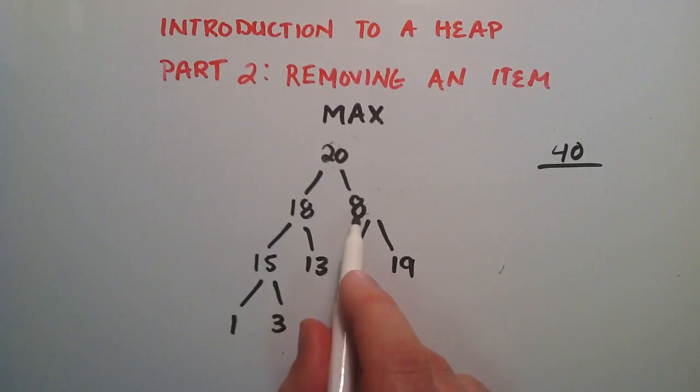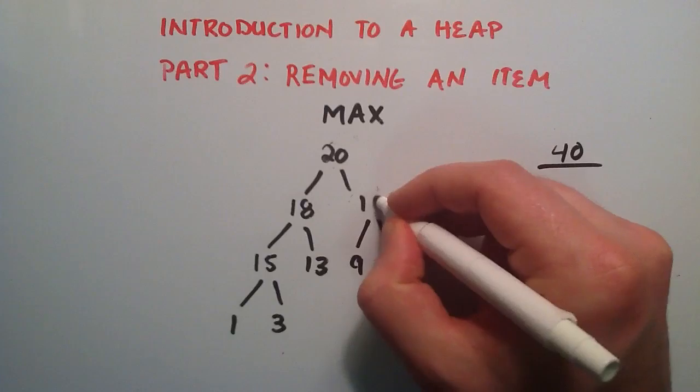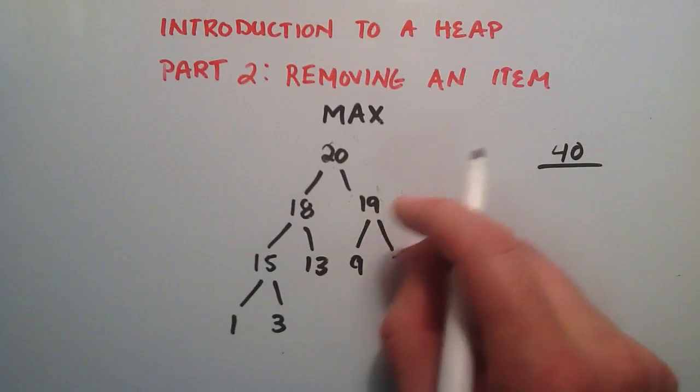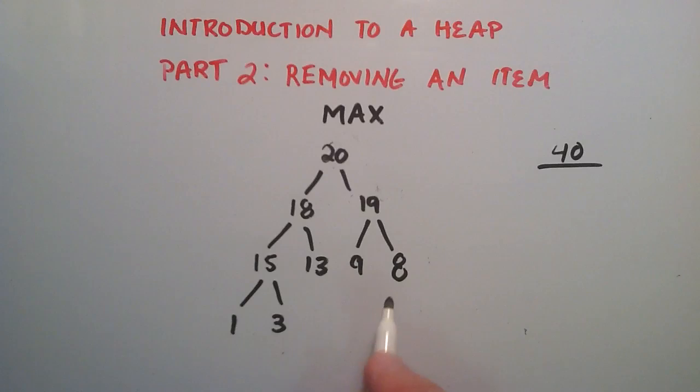And so then we check once again, we check the two children of this guy right here, and so we're going to compare 9 and 19. 19 is bigger. Then we check, is 19 less than 8? Nope, it's not. So we move 19 up to where 8 is, and we put 8 where 19 is. We just flip the two. And so now we have, once again, our max heap.